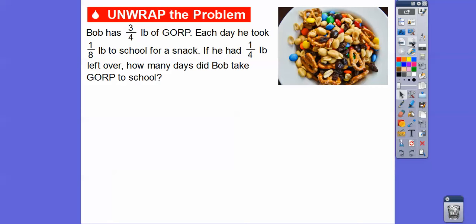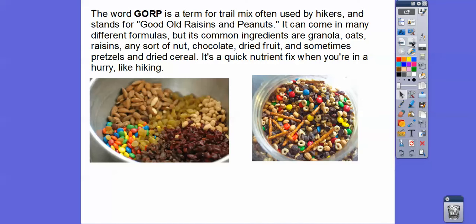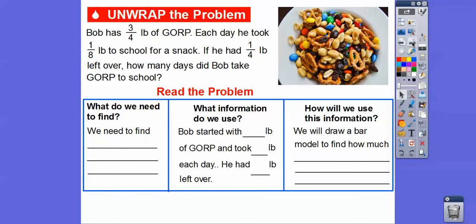Bob has 3/4 of a cup of gorp. What is gorp? Gorp is what hikers use — it stands for Good Old Raisins and Peanuts. It can come in many formulas, with common ingredients like granola, nuts, raisins or other dried fruit, sometimes chocolate, pretzels, and cereals. It's a quick nutrient fix hikers can grab while on a trail. So anyway, each day Bob took 1/8 of a pound to school for a snack. If he had 1/4 of a pound left over, how many days did Bob take the gorp to school?